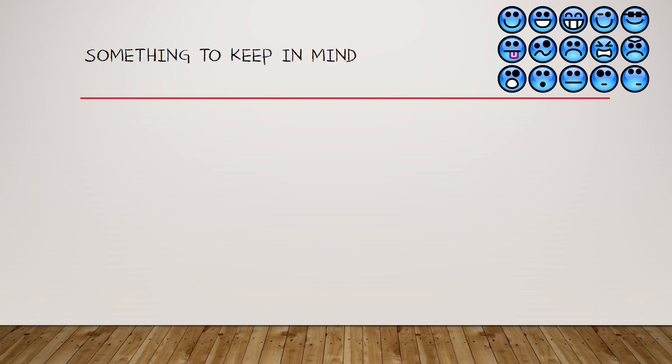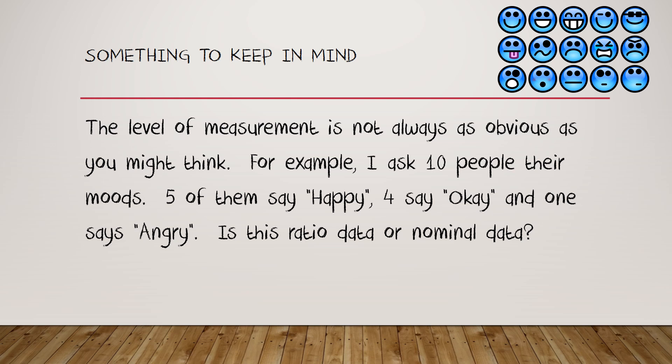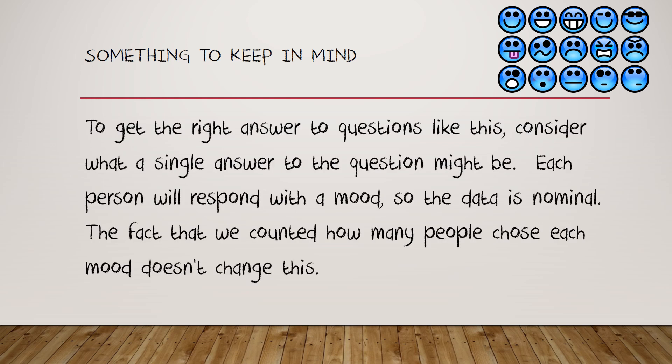Okay, one more thing to keep in mind. Sometimes you'll have to figure out what level of data you're dealing with. And so you might be told something like this: I asked ten people for their moods, five of them say happy, four say okay, and one says angry. I want to know if this is ratio data or nominal data. On the one hand, zero people makes perfectly good sense, and to say that four people is twice as many as two people makes perfectly good sense, so that sounds like ratio. On the other hand, we've got these words here. Which one is it? Well, to answer the question, consider what a single answer to the question might be. You ask a person what their mood is, they're going to respond with a word, and therefore the data itself is nominal. The fact that we counted how many people chose a mood doesn't change the fact that we're dealing with nominal data.